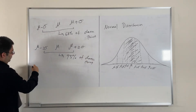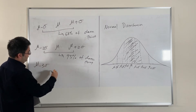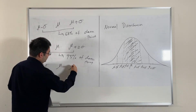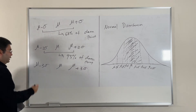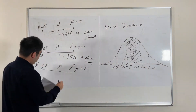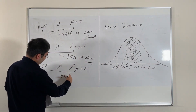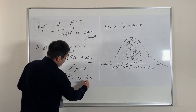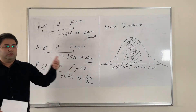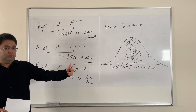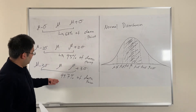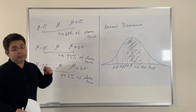Let's do one more. For mu minus 3 standard deviations to mu plus 3 standard deviations, this much larger range covers 99.7% of the data. What it means is that if you take the range from 3 standard deviations below the mean to 3 standard deviations above the mean, you pretty much cover all your data points.